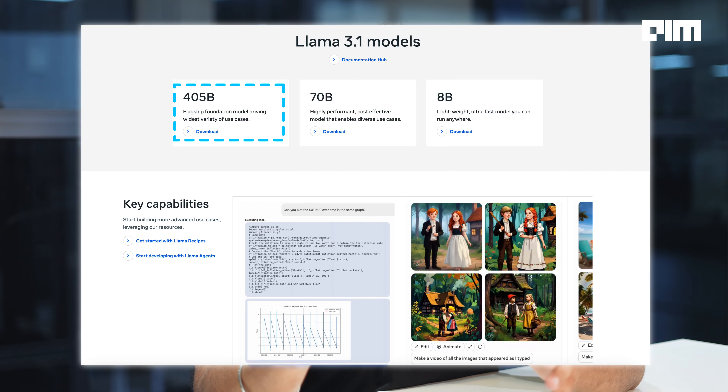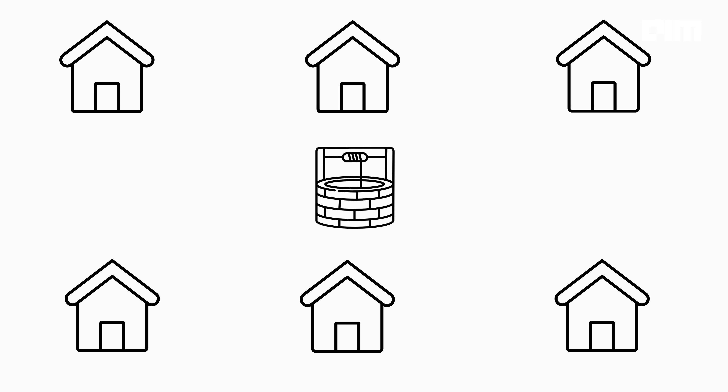Remember those torrent days when you used to download movies and games for free? Well, the same peer-to-peer technology is now being used to run AI models without GPUs. Yes, you heard that right — without any GPUs.